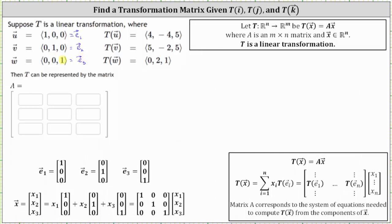When we have the transformations of the standard basis vectors, we can easily determine the transformation matrix. If we have a linear transformation given by T of x equals A times x, the transformation matrix is determined by the transformations of e sub one through e sub three, where T(e sub one) gives the first column of matrix A, T(e sub two) gives the second column, and T(e sub three) gives the third column.